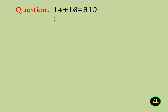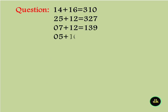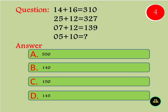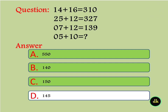14 plus 16 is equal to 310. 25 plus 12 is equal to 327. 7 plus 12 is equal to 139. What is 5 plus 10? Answer is 145.